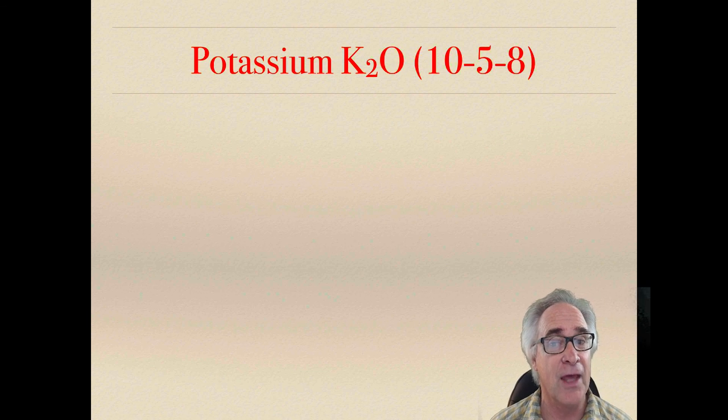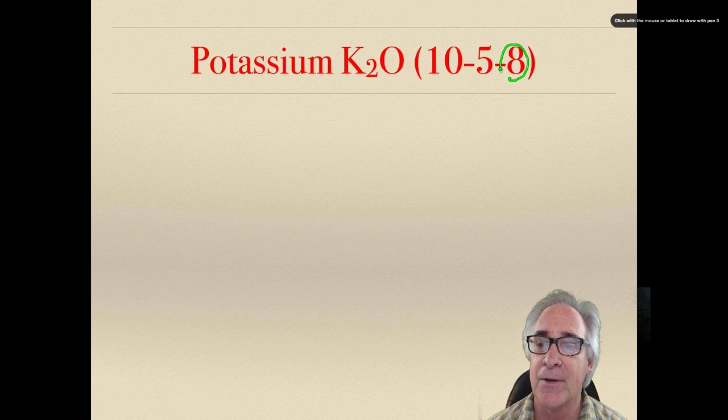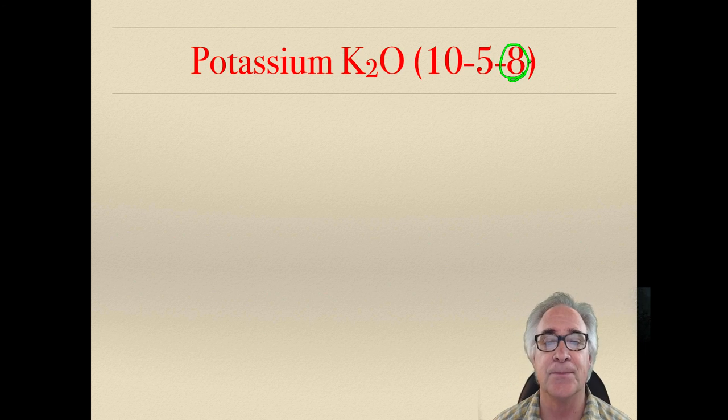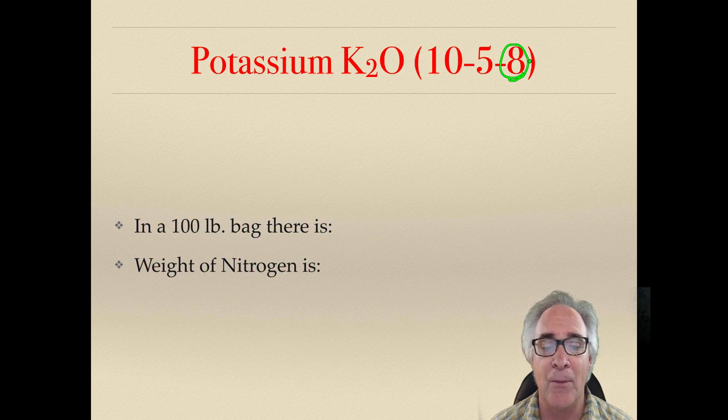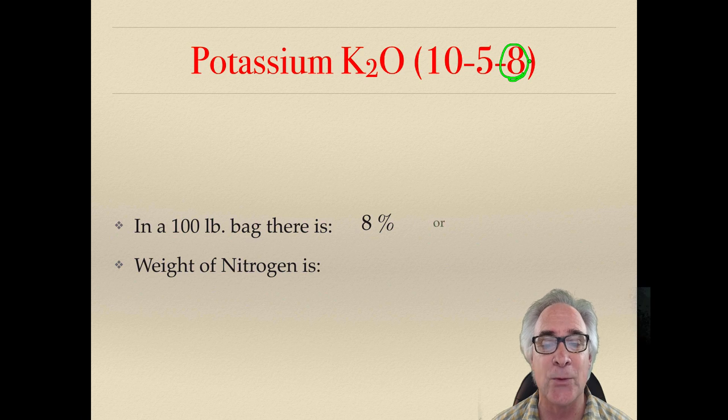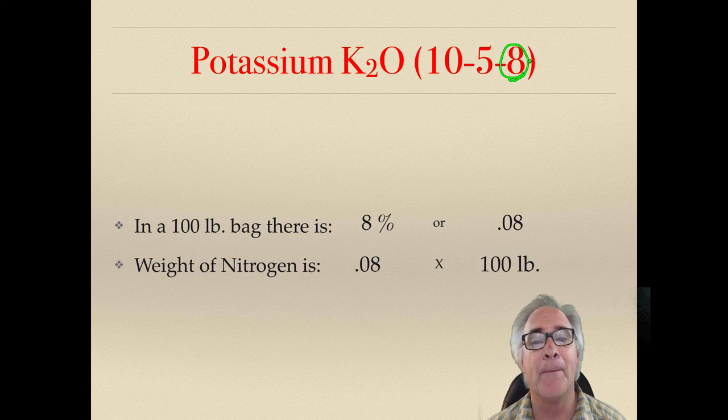Potassium, 10-5-8. And we're looking primarily at 8 here because that is potassium. So what we're going to do is again, 100-pound bag, and we're going to take that 8% and we're going to convert it into .08. And take that .08, multiply it by 100, and then we're going to get a grand total of 8 pounds.